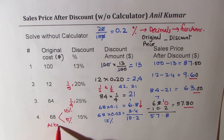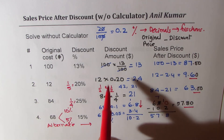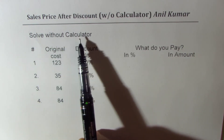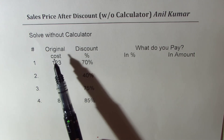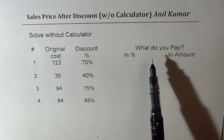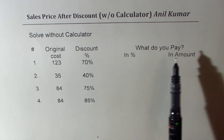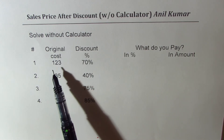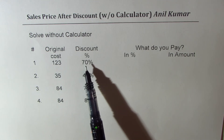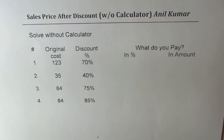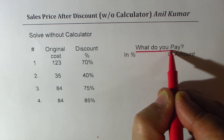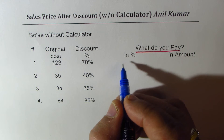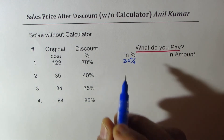Now let's show you the alternate method — finding what you pay directly. I have four more examples to solve without a calculator. We're given original cost and percentage discount, and we want to find what you pay. If the cost is $123 and discount is 70%, what you pay is very important: with a 70% discount, you do not pay 70% — you pay 30%.